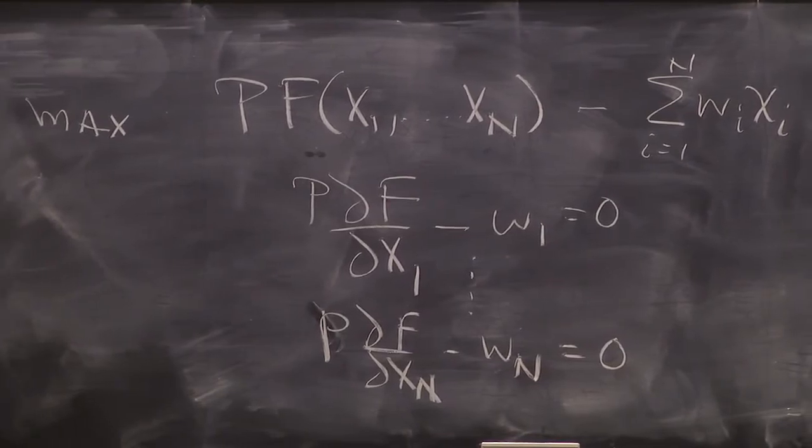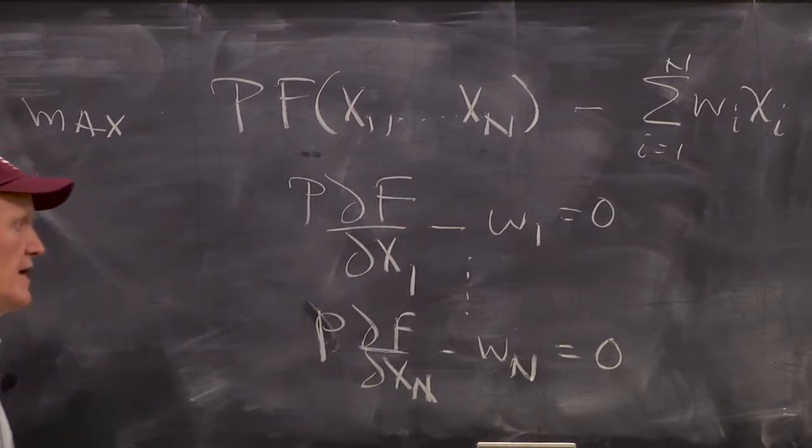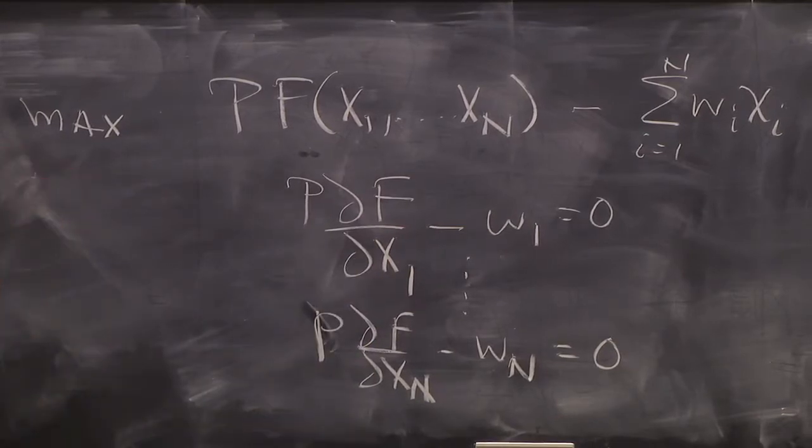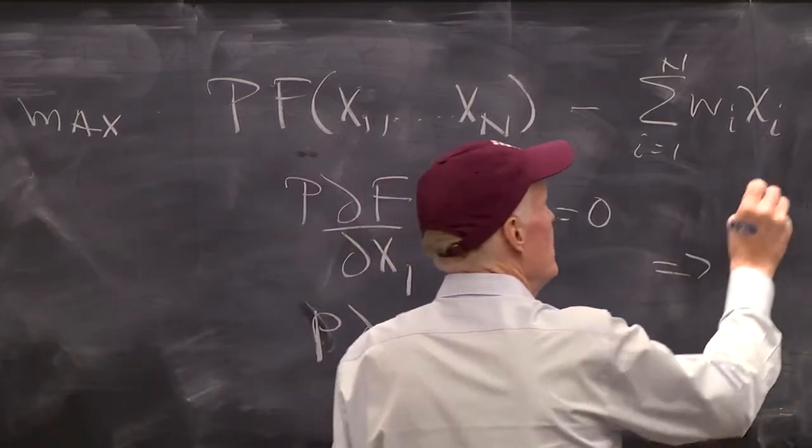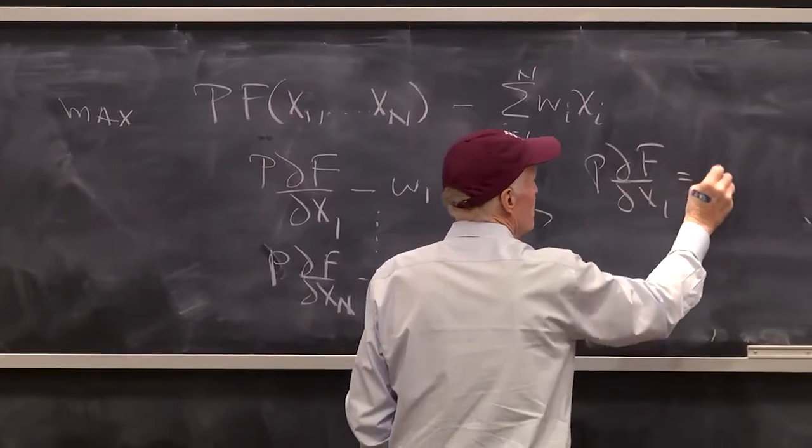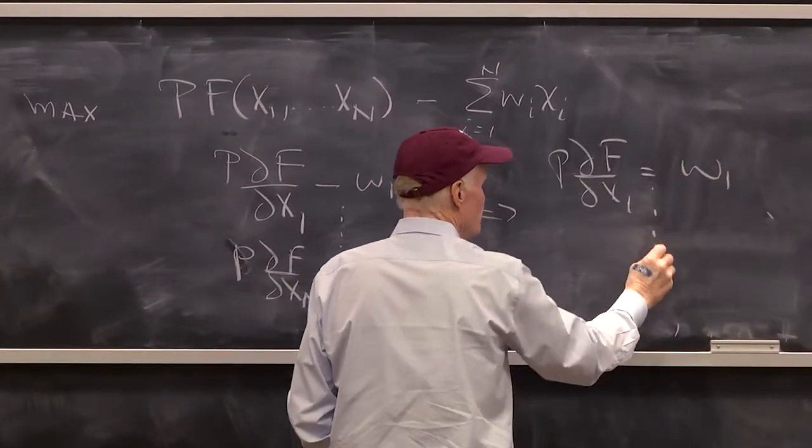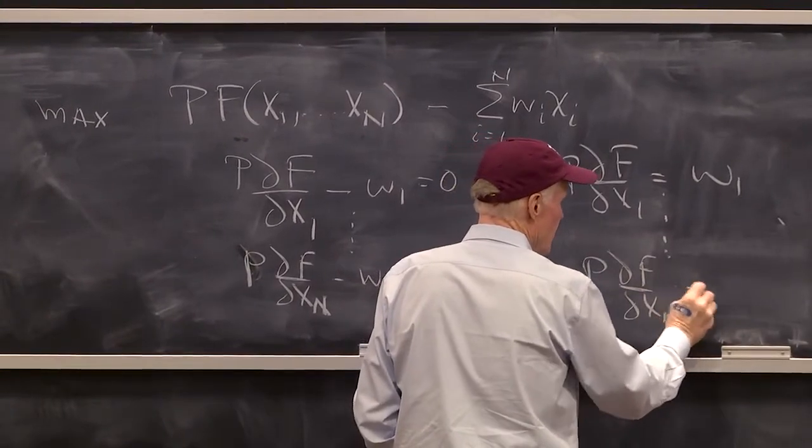Now remember, these are partial derivatives, so these are holding constant the usage of other inputs. So we can just write this out as P partial f, partial x1, equals w1, down to P partial f, partial xn, equals wn.